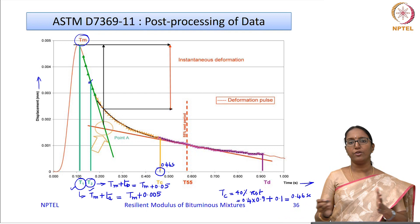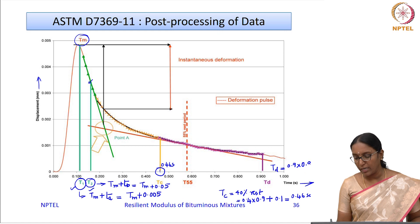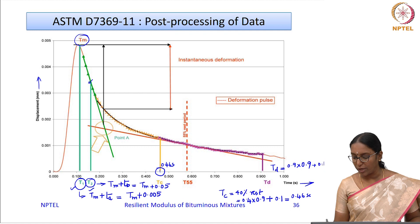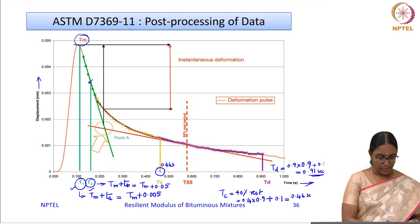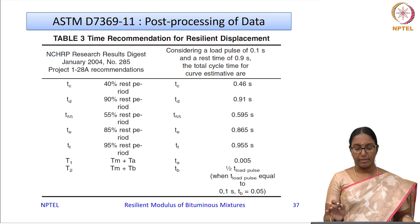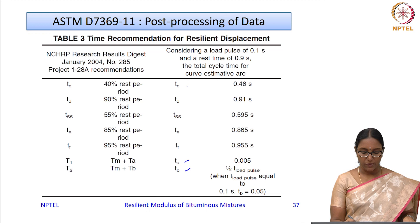The tertiary or third stage hyperbola thus covers from 0.46 seconds to 0.91 seconds. These are recommendations given by NCHRP. As shown, TA and TB are noted, along with the 40 percent and 90 percent rest period time markers.